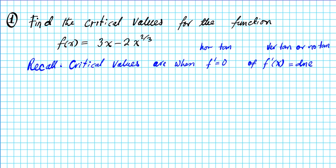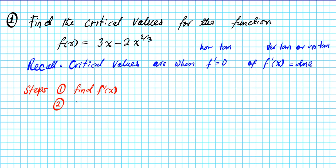Now let's look at the steps involved in finding critical values. Step one: find the derivative f'(x) of the given function. Step two: find where the derivative equals 0 — horizontal tangent line — or where f'(x) does not exist.